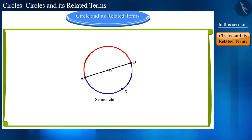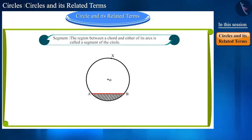The length of the entire circle is called circumference, and the region between a chord and either of its arcs is called a segment of the circle.